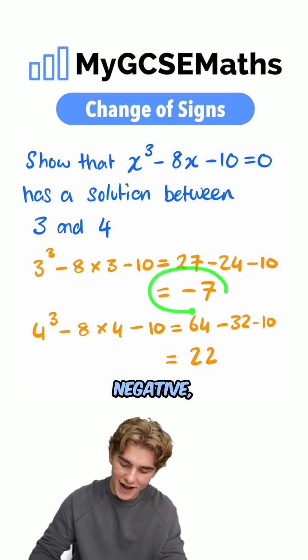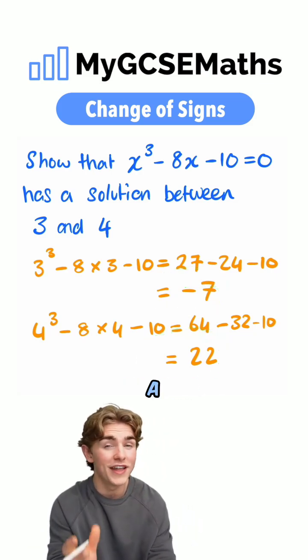We can see that one is negative, one is positive. Therefore, there's a change of signs. Therefore, a solution lies between.